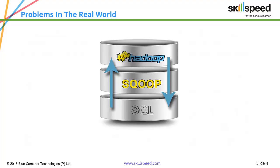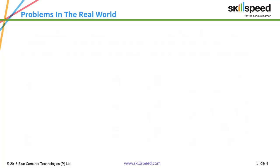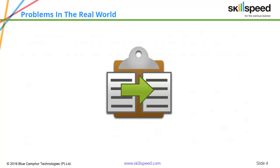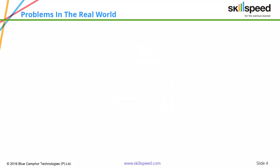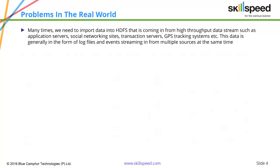Sqoop allows an RDBMS system to connect to Hadoop and transfer the structured data. The second method is that you can manually copy the data if the file is present in the local file system. However, many times we might face a situation where we have to take data from external systems and continuously dump it into Hadoop. We call such a type of data as streaming data.